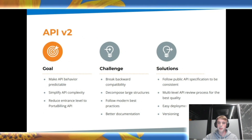Such changes require backwards compatibility to be broken. Furthermore, we can't rebuild all of our API in a single step, so we have to mitigate your pains of frequent changes. To make it happen, we introduce new API version 2, available as a separate service that can be deployed to any maintenance release and work in parallel with the current API.